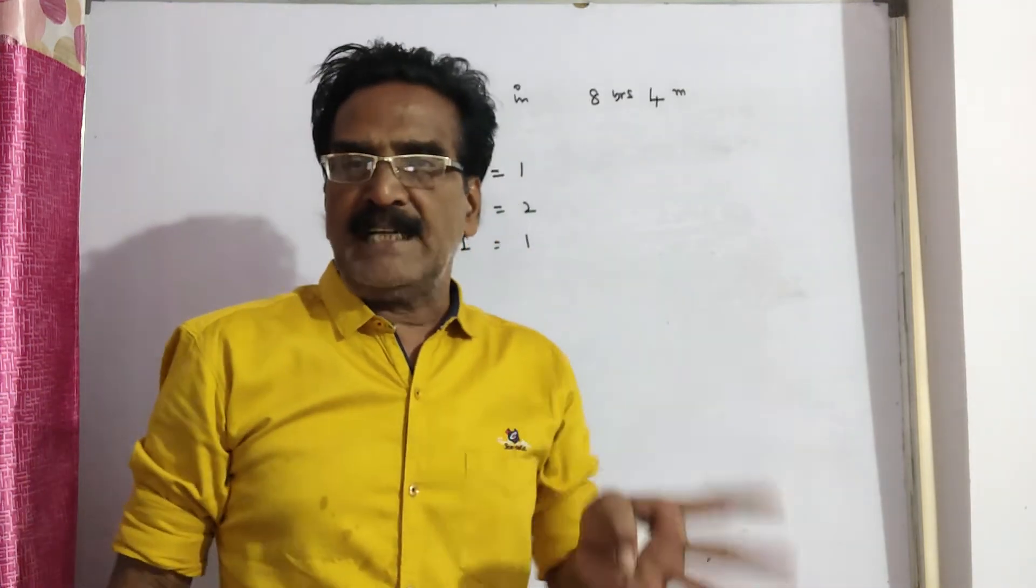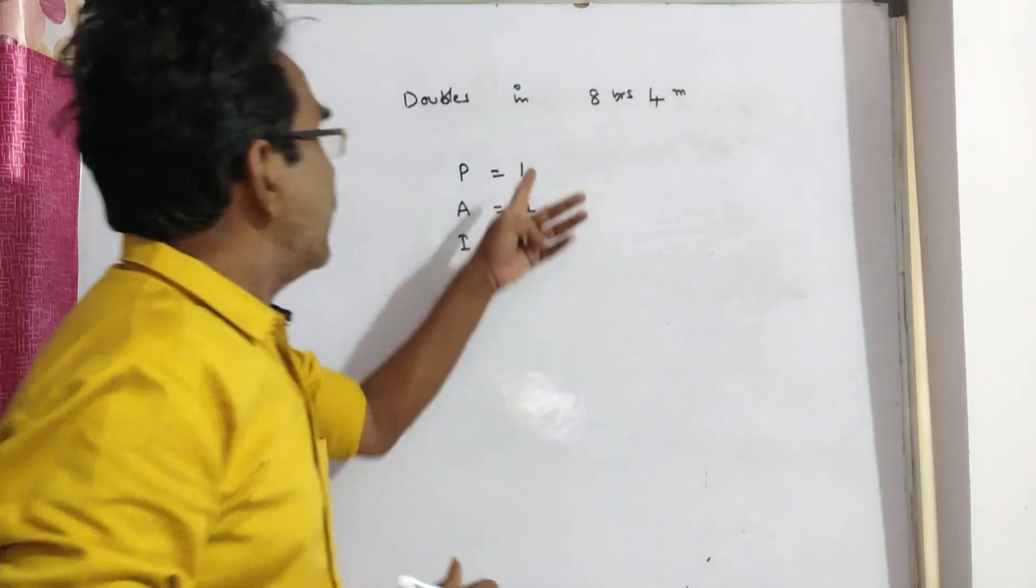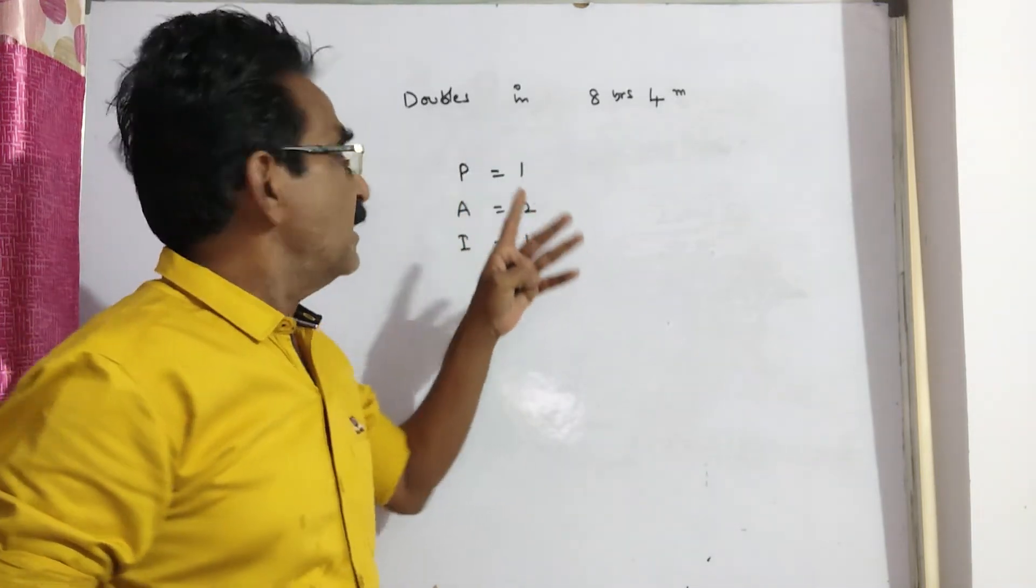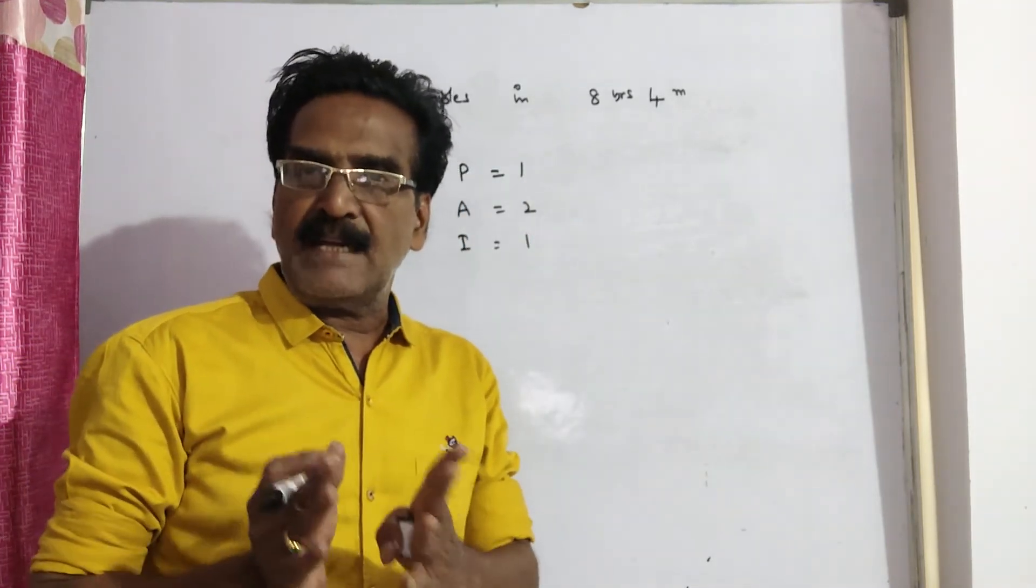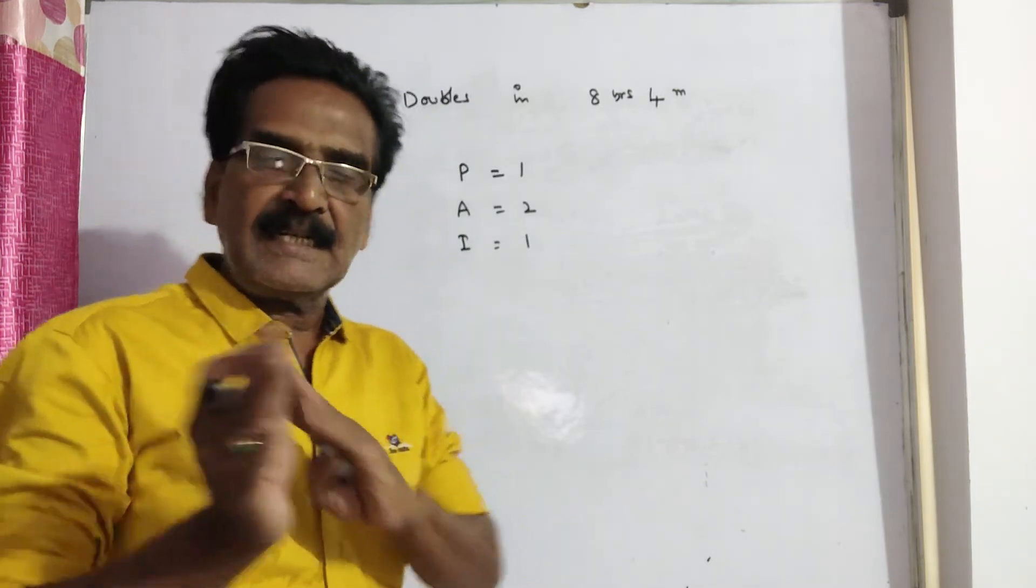Friends, remember one thing. Whenever a certain sum is doubled, take P equal to 1 and I equal to 1. P and I are equal whenever a certain sum is doubled.